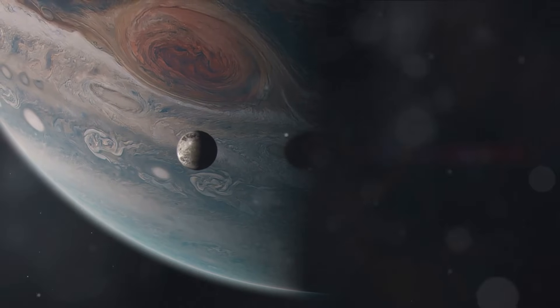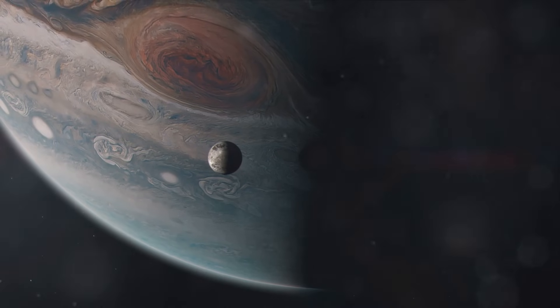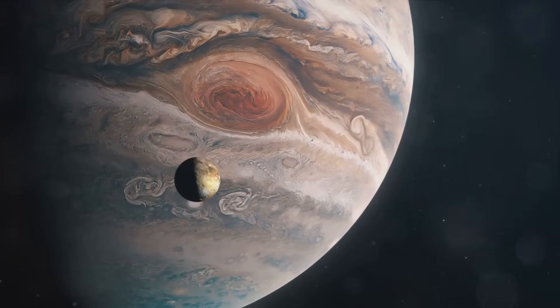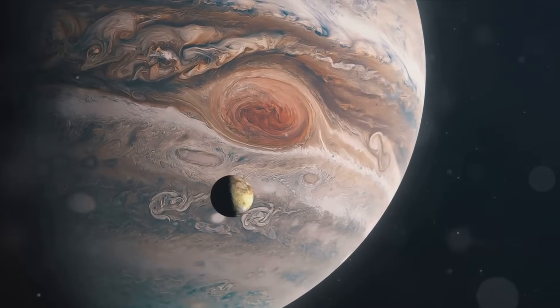And we can't forget about Jupiter's moons. With 79 known moons, Jupiter is like a mini solar system in its own right. And among these moons is Ganymede, the largest moon in the solar system. Ganymede is even bigger than the planet Mercury.